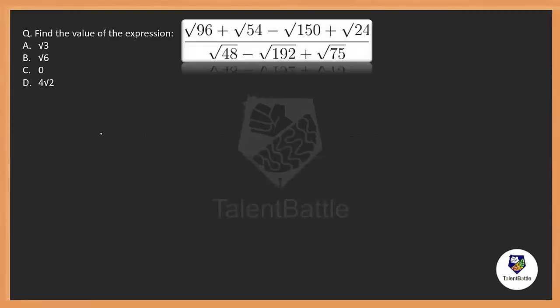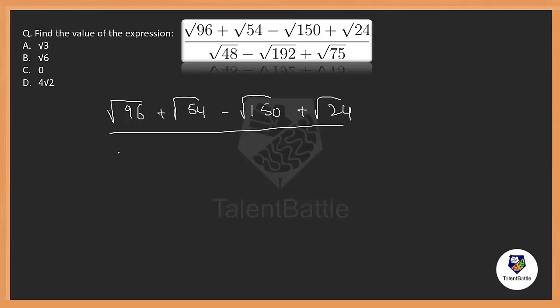Find the value of the following expression. We need to identify the value of the particular expression: root of 96 plus root of 54 minus root of 150 plus root of 24, divided by root of 48 minus root of 192 plus root of 75. If you clearly observe, none of these numbers has a direct root.